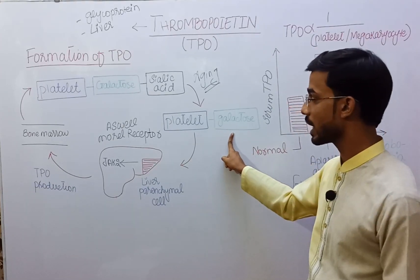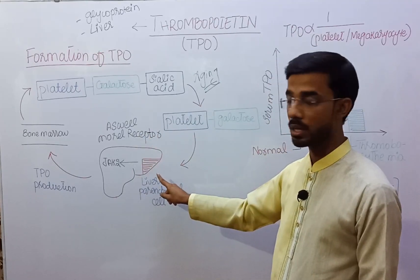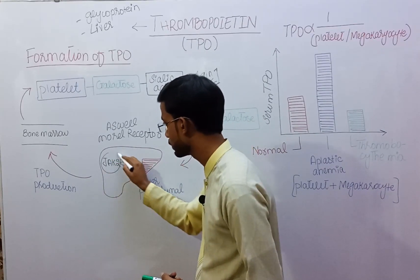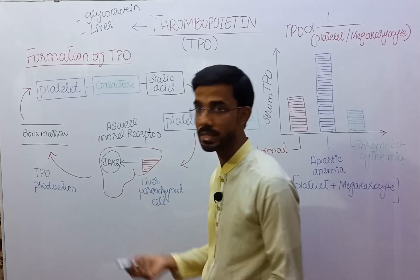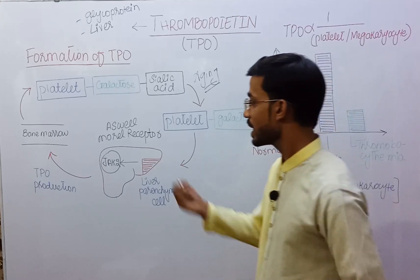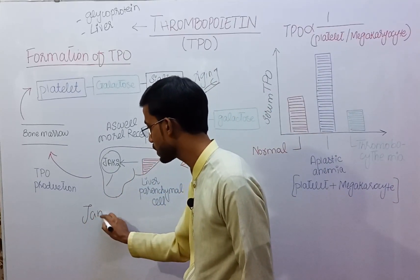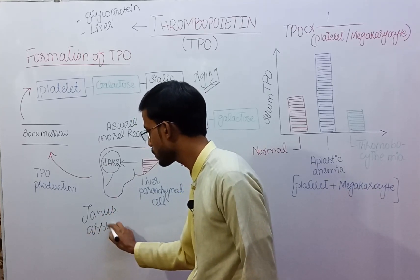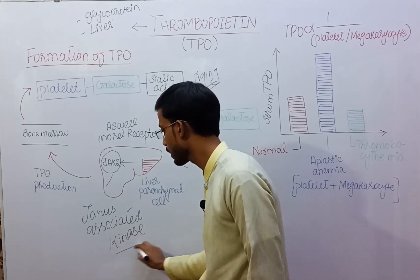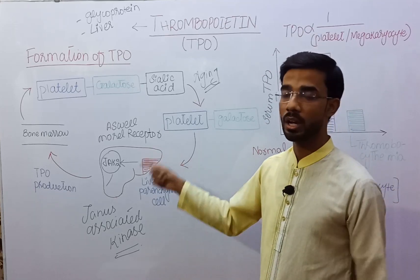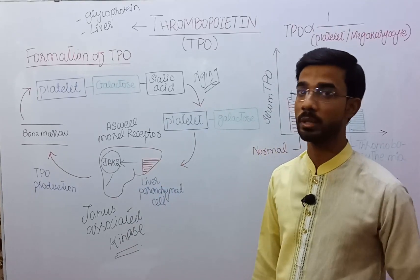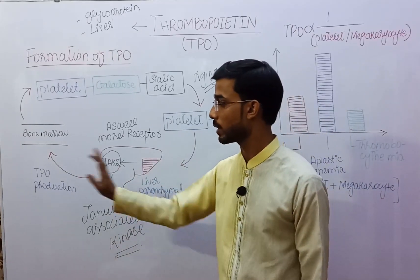When the galactose is attached with the asialoglycoprotein receptors, a pathway called the JAK2 pathway is initiated. JAK2 pathway is basically an intrinsic pathway which helps in the production of TPO. JAK stands for Janus Associated Kinase. The pathway details will be discussed in upcoming videos, but now the focus is on the production of TPO, which is produced through this process.